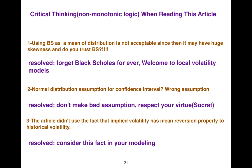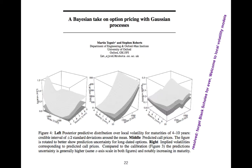Don't trust Black-Scholes normal distribution assumptions for confidence interval. Wrong assumption, don't make bad assumptions, respect your virtue. The article didn't use the fact that implied volatility has mean reversion property to historical volatility.